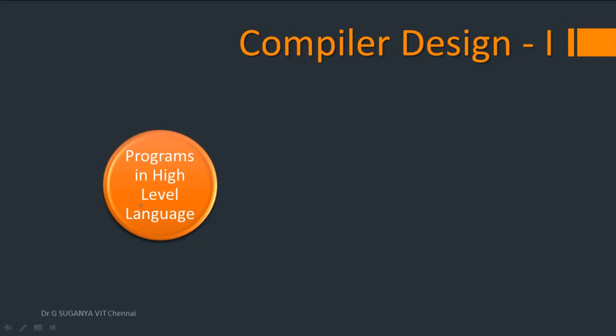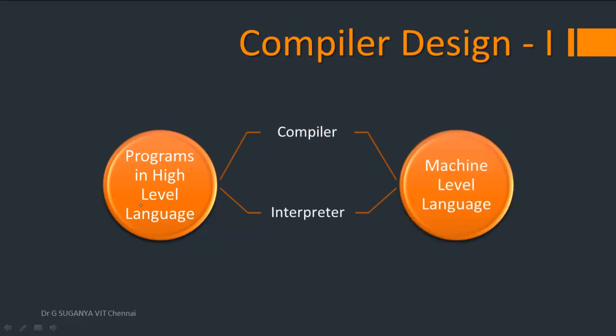But here I'm going to give you the glimpse of only the high level language to machine level language translators, which is nothing but the compiler and interpreter. So either of the one or both the things will convert the program in high level language to the program in machine level language. Coming to the difference between compiler and interpreter: